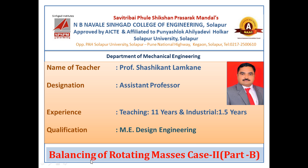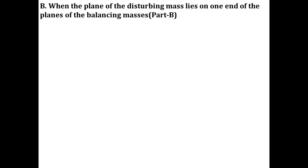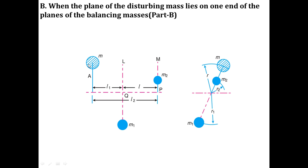In the previous video, we discussed about the balancing of rotating masses, Case 2 Part A. Now in this video, I am going to discuss in detail the balancing of rotating mass, Case 2 Part B. I am going to first revise shortly Case 2 and then focus on Part B. Case 2 is the balancing of a single disturbing mass by using two balancing masses lying in different planes.